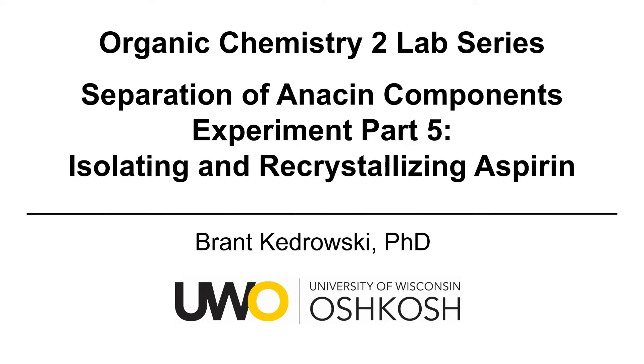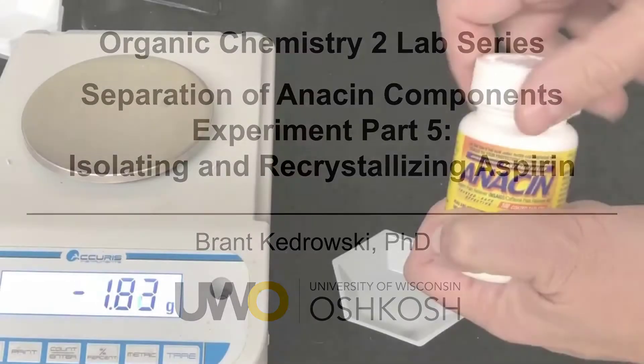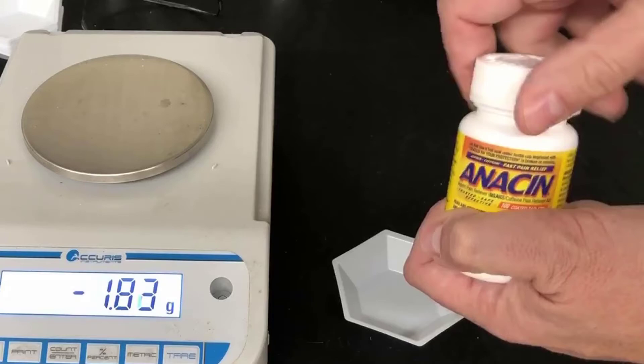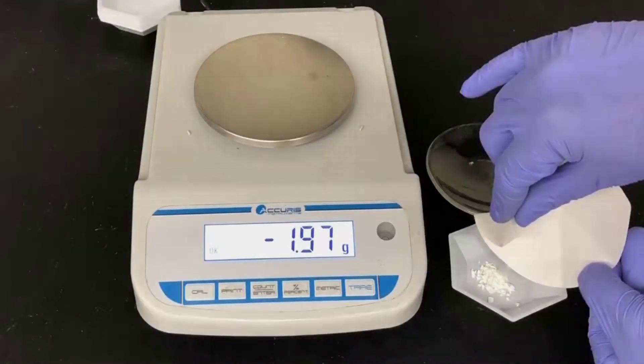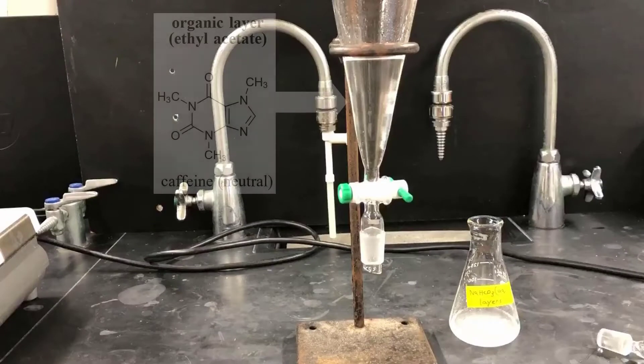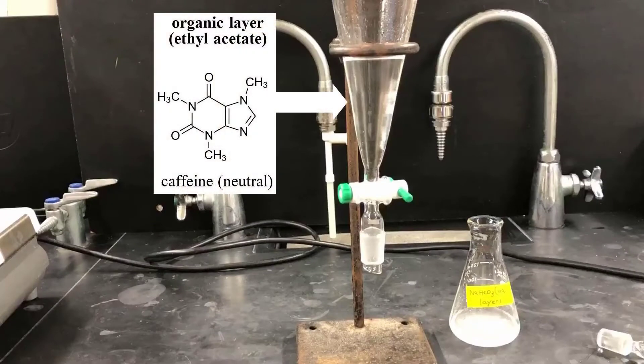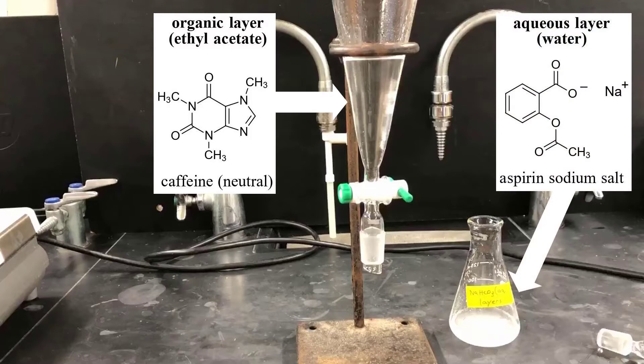In a previous video, I talked about separating the components of anacin in a series of extractions. Here's where I left you at the end of the last video. I had isolated binder as a solid material. I have caffeine dissolved in an ethyl acetate solution in a separatory funnel, and I have the sodium salt of aspirin in a water solution in an Erlenmeyer flask. In this video, I'm going to cover protonating the aspirin salt to convert it into neutral aspirin, isolating it as a solid, and then recrystallizing it to purify it.